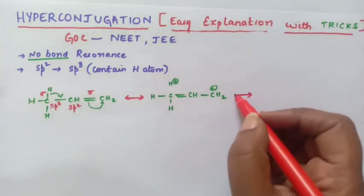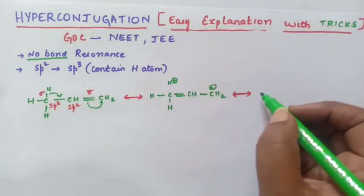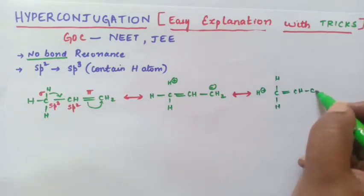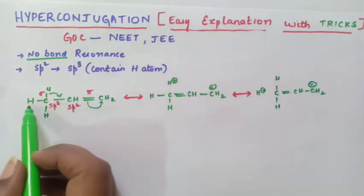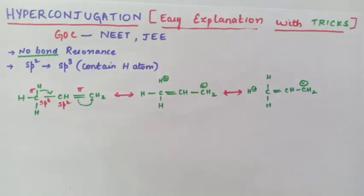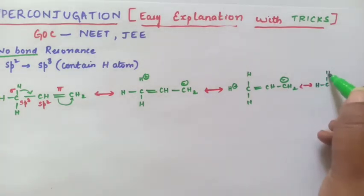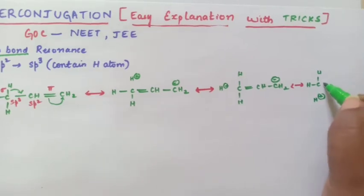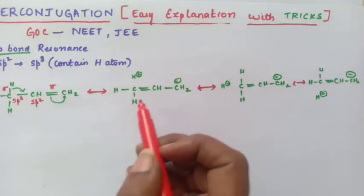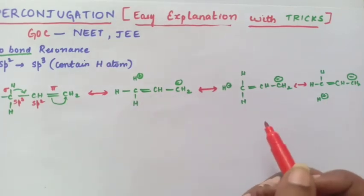Another structure if I want to write — for one hydrogen atom I have written the hyperconjugation structure. The same way we can write for the second hydrogen atom: H plus, then carbon-hydrogen-hydrogen, double bond, CH, CH2 minus. Same way we can write for the third hydrogen atom as well: hydrogen, carbon, hydrogen, and here H plus, double bond, CH, CH2, and then a negative sign. So now these are the three hyperconjugation structures written for this molecule.